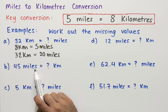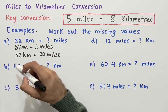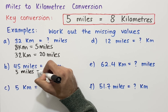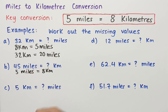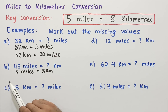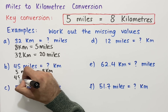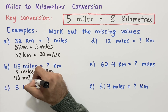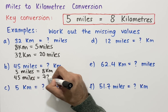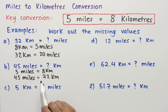For Example B, we need to work out how many kilometers 45 miles equals. Starting with our conversion — 5 miles equals 8 kilometers — we check whether there's a number we can multiply 5 by to get 45. That number is 9, so 9 times 5 gives us 45 miles. Multiplying the right-hand side as well, 8 kilometers times 9 gives us 72 kilometers. So 45 miles equals 72 kilometers.